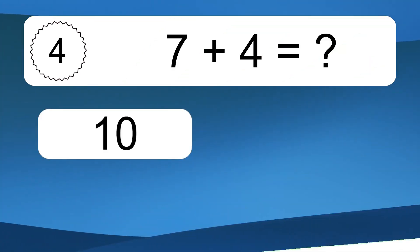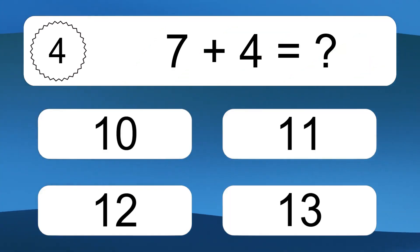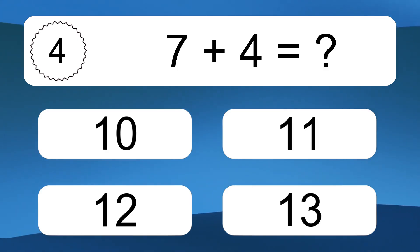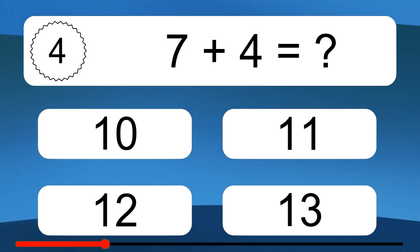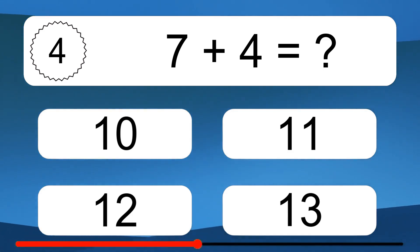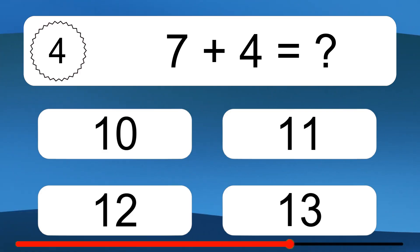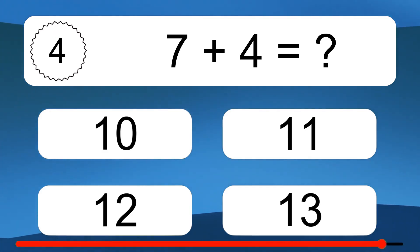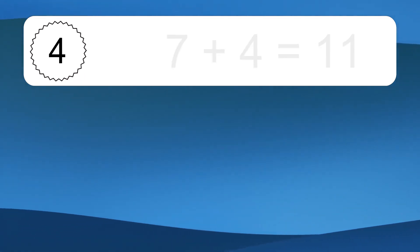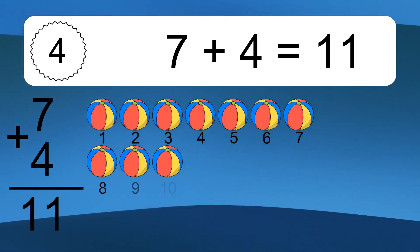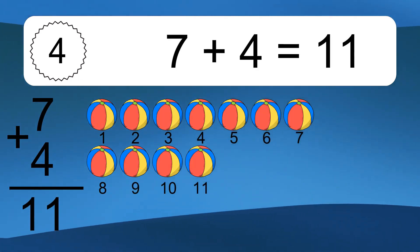7 plus 4 equals what? 7 plus 4 equals 11.